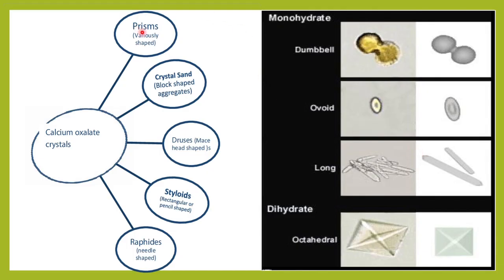These are the various forms of calcium oxalate crystals. You can see the monohydrate form — this is the most common form which we see. Sometimes we also see the dumbbell shaped form. And this is the dihydrate form.